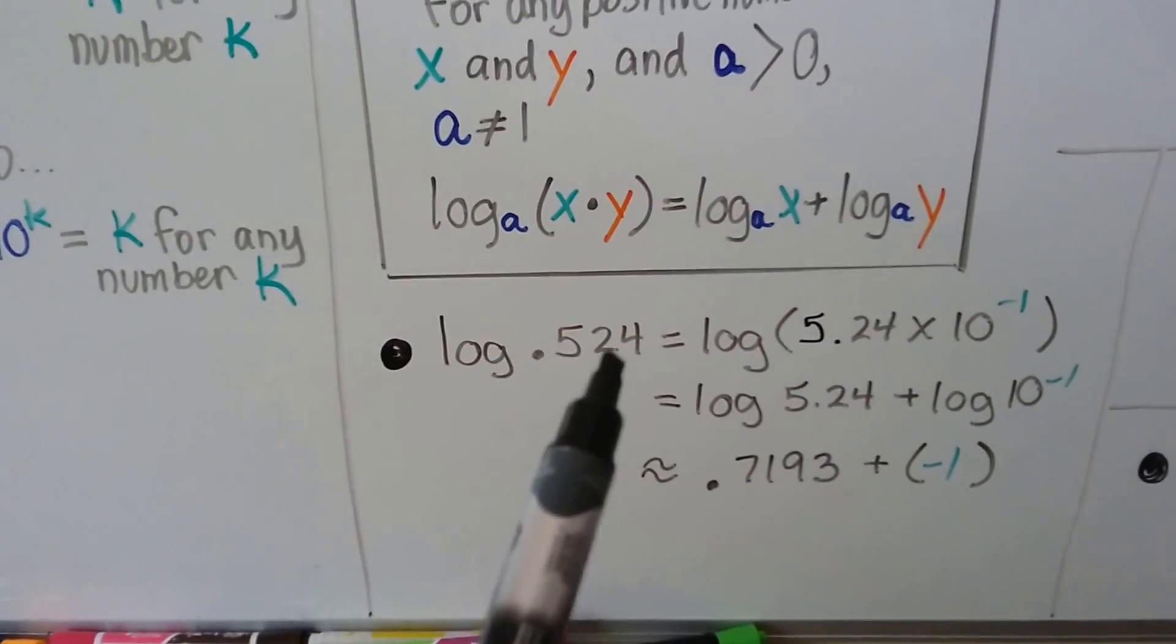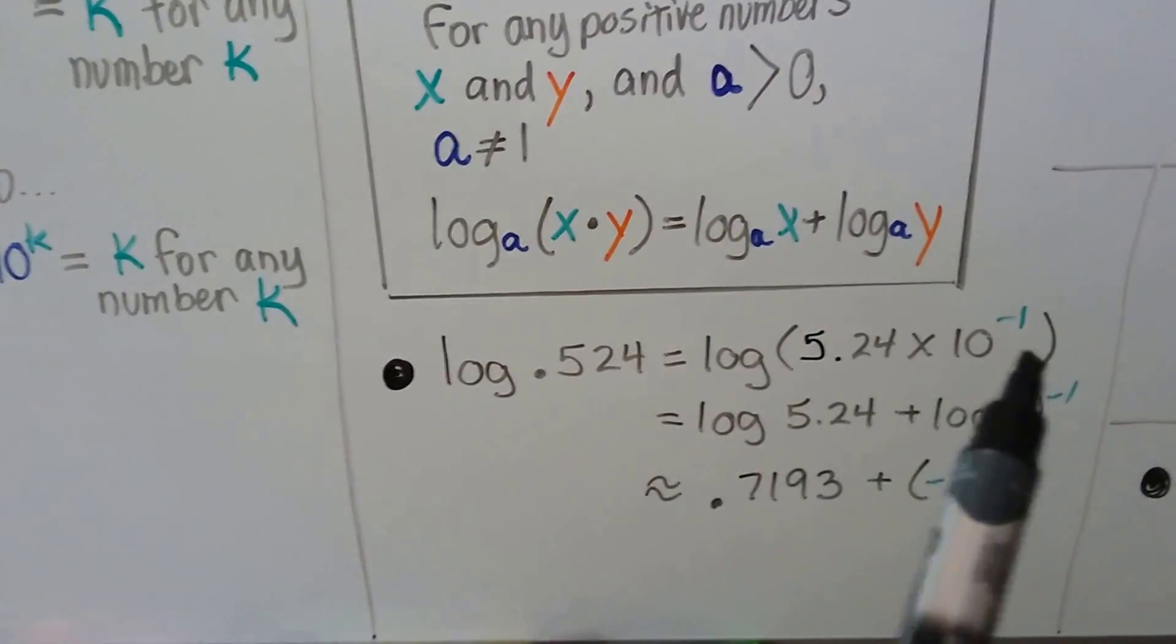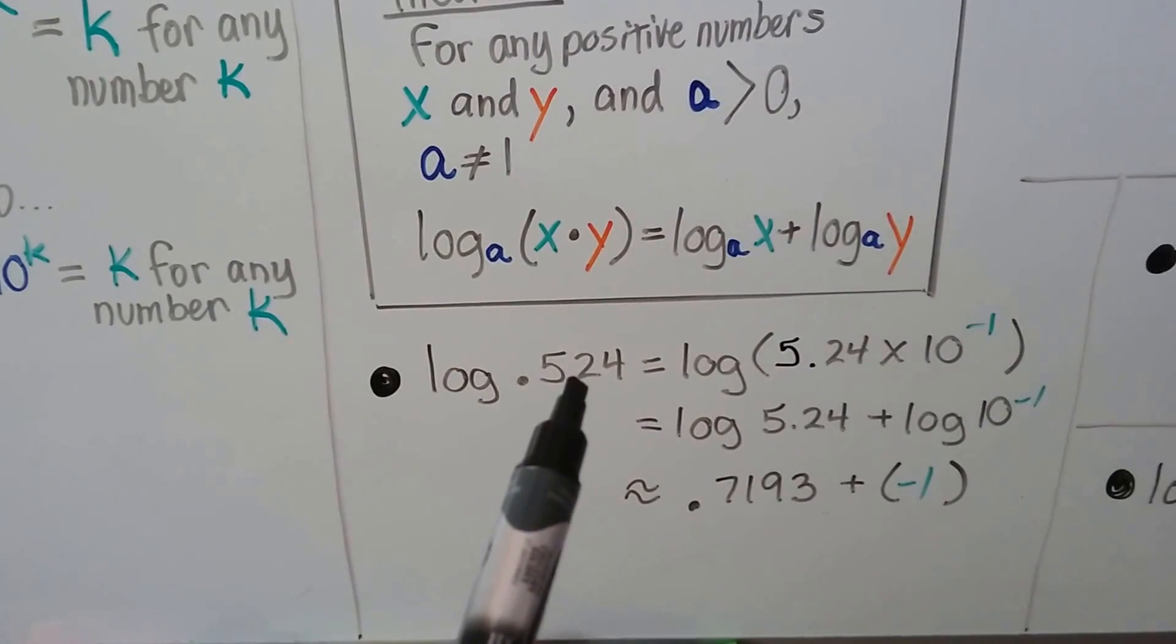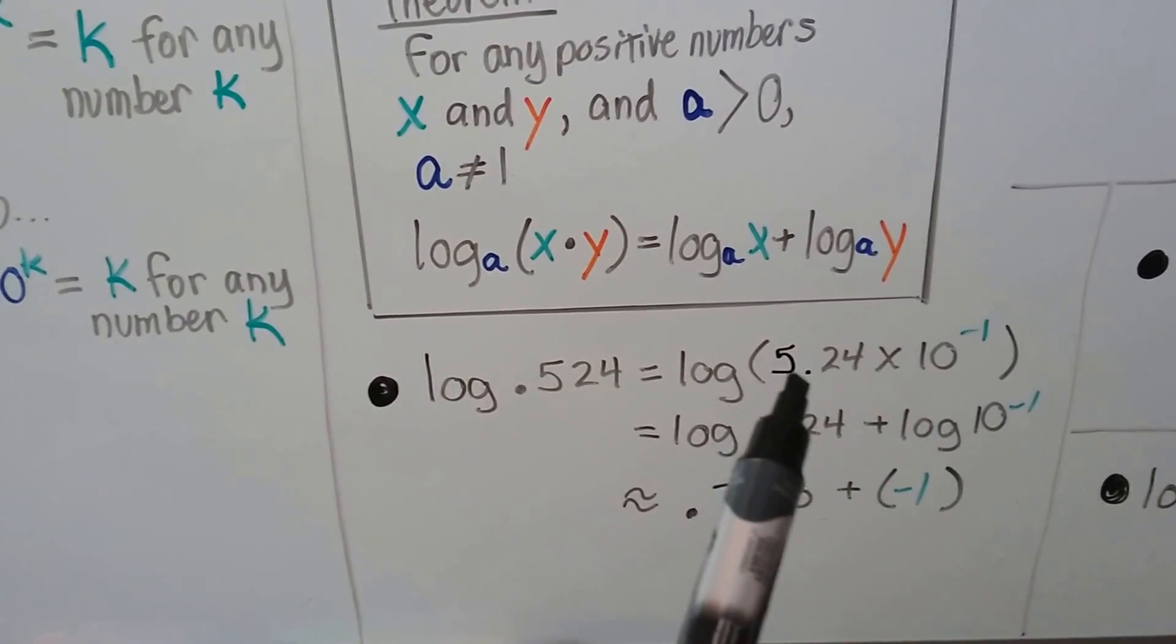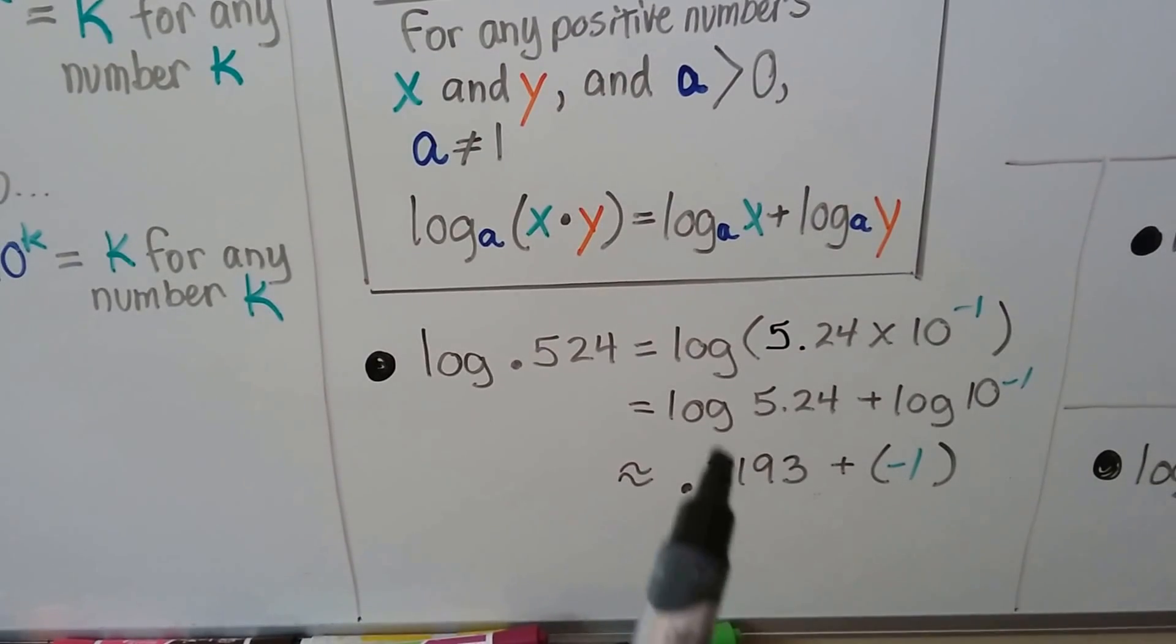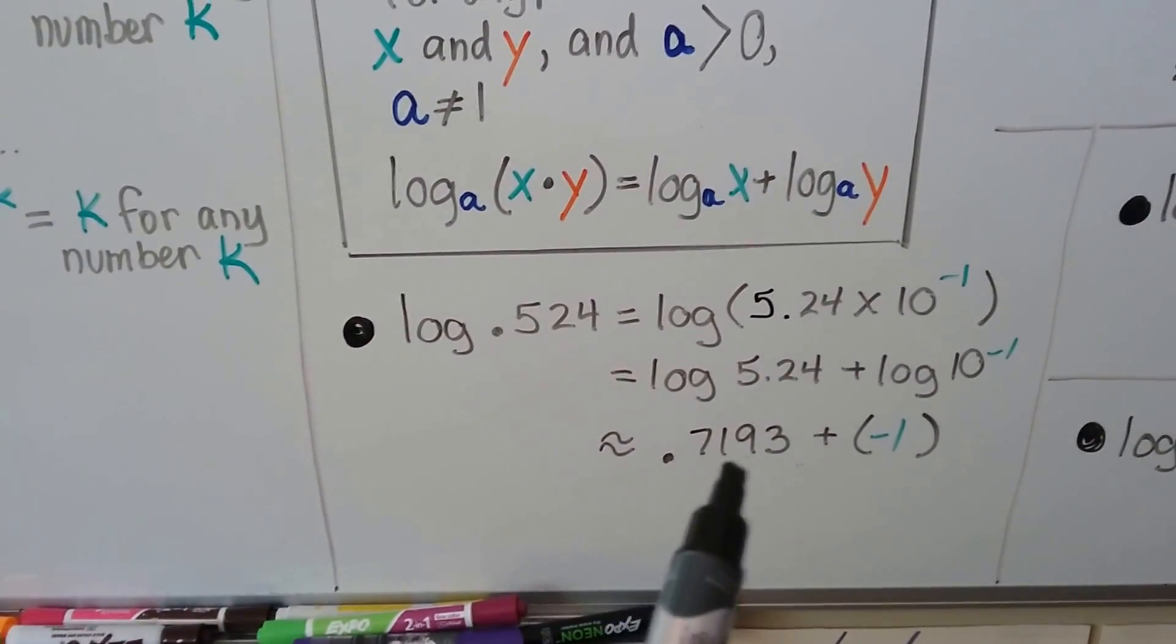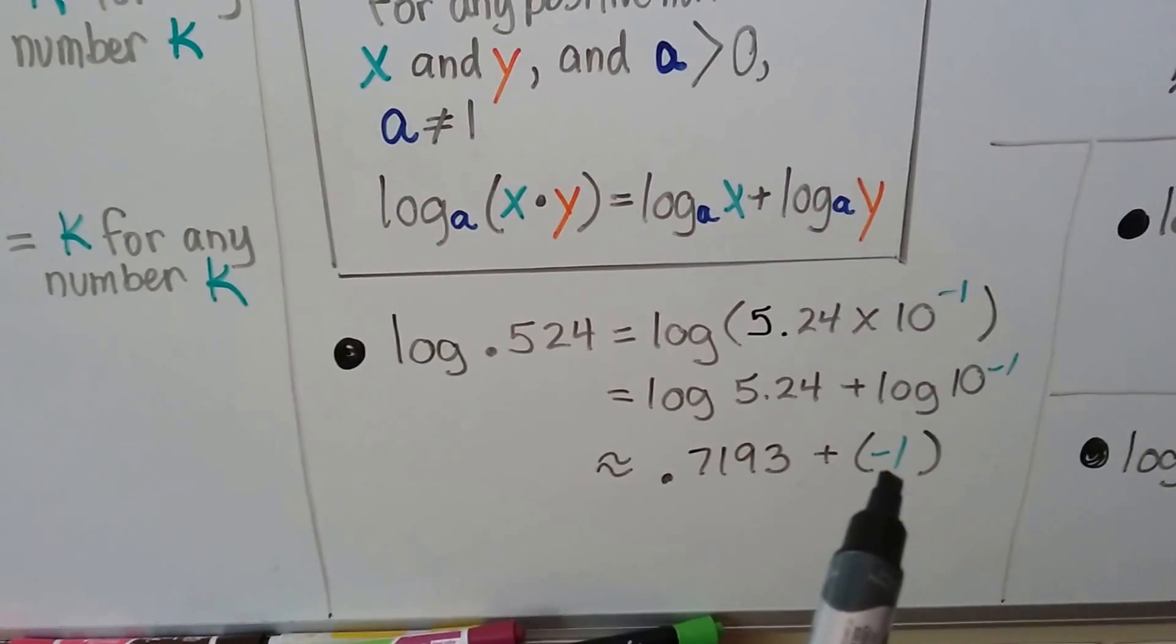So take a look at this. We've got log 0.524. And it's going to equal, in scientific notation, because we move the decimal point over 1 hop to the right for scientific notation, 5.24 times 10 to the negative 1, because we moved it to the right once. So if we distribute this, that means we have log 5.24 plus log 10 to the negative 1, which gives us approximately 0.7193 plus that negative 1.